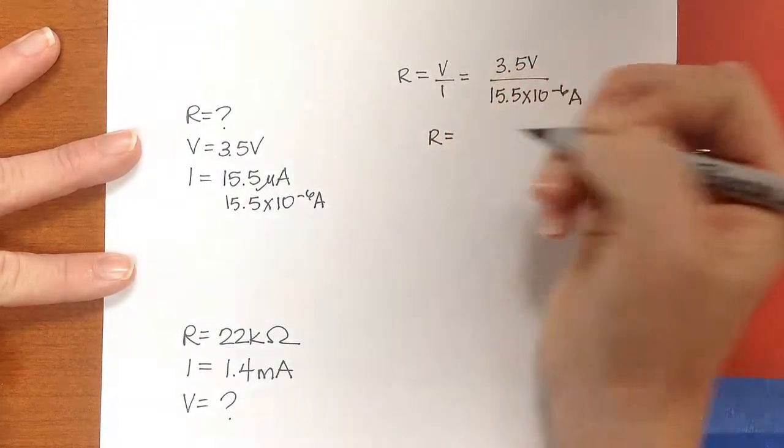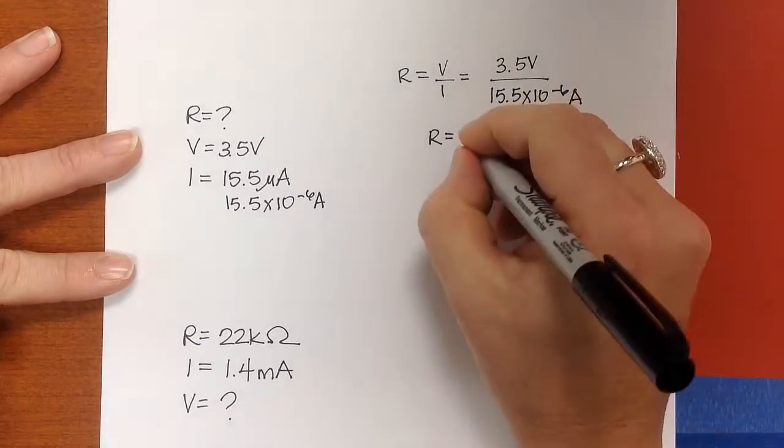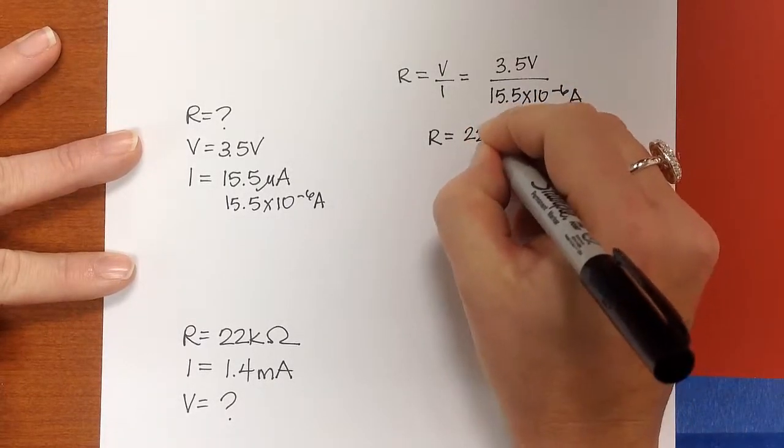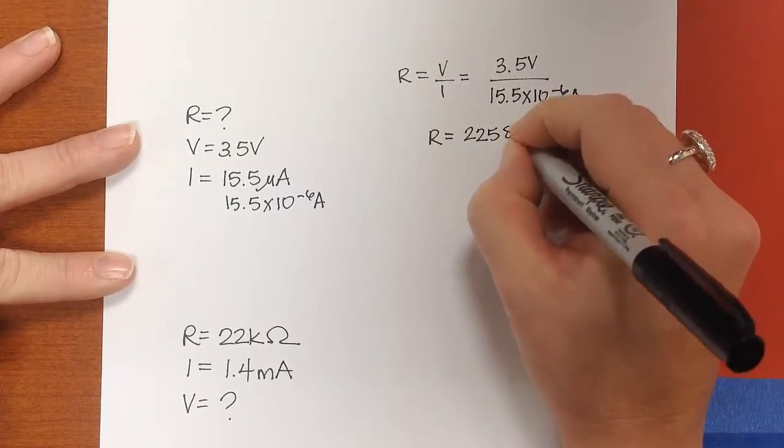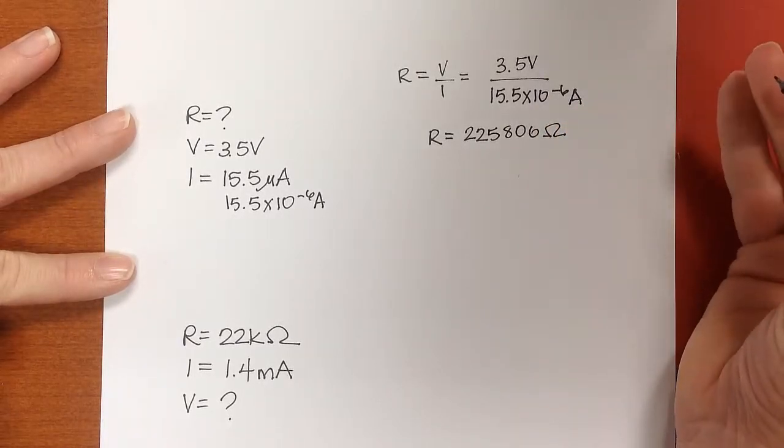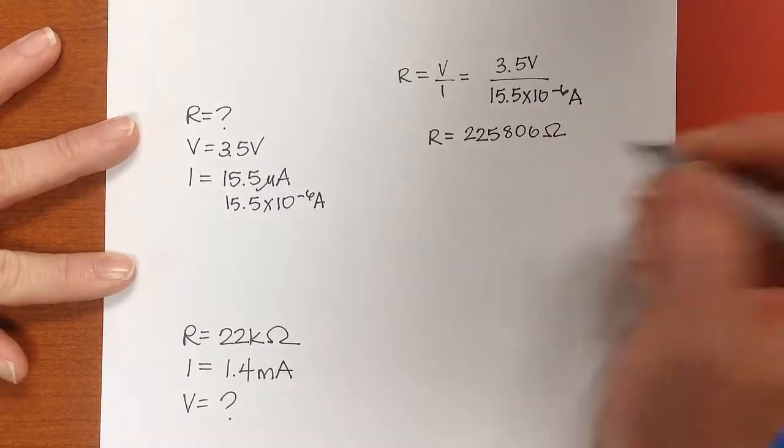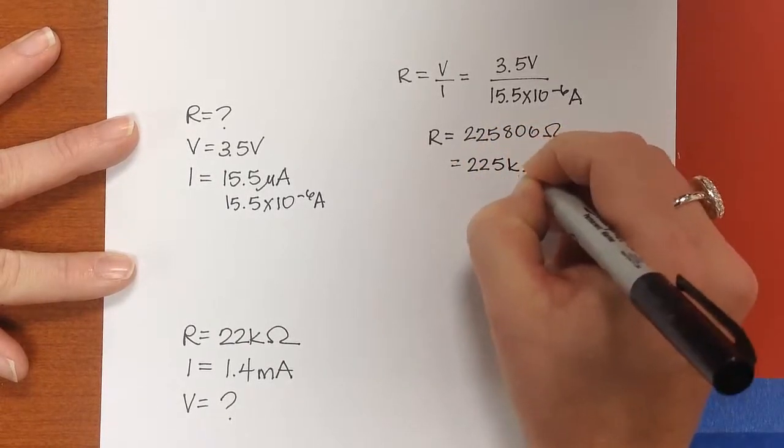And I end up with R equal to 225,806 Ohms. Or we could write that as 225 kilo-ohms.